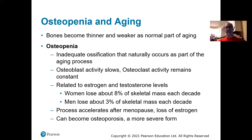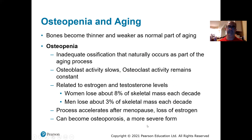As we get older, osteoclasts become more active and osteoblast activity slows, so bones become thinner and weaker — a normal part of aging. Much of this is related to decreasing levels of estrogen or testosterone. This results in osteopenia, where bones become thinner and weaker, which can become osteoporosis if more severe.